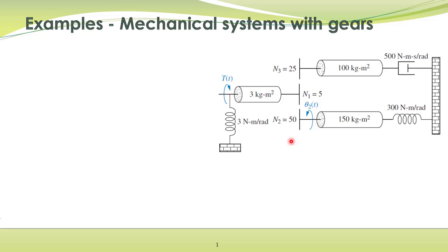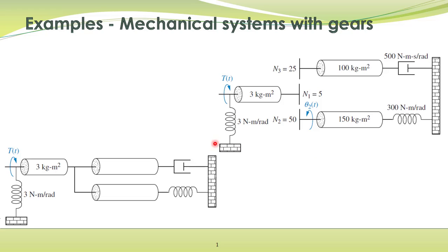To obtain a mathematical model for this mechanical system, the easiest approach is to reflect all the impedances to this side of the shaft. We know how to reflect impedances to the other side of the shaft. If we reflect an impedance to this side, we have to multiply that impedance by the square of the gear ratio. Here is the equivalent mechanical diagram with all impedances referred to this side of the shaft.